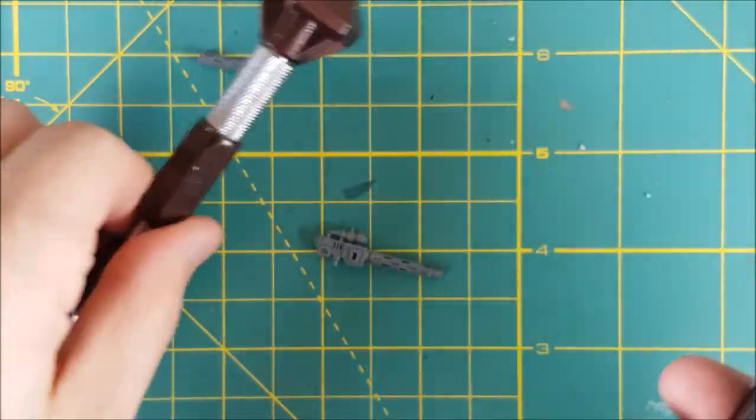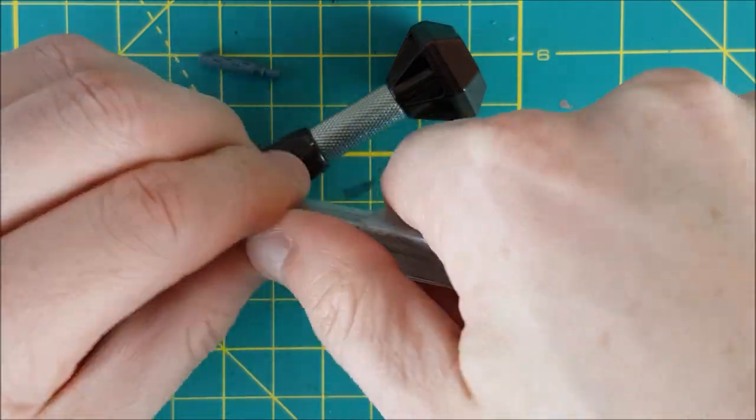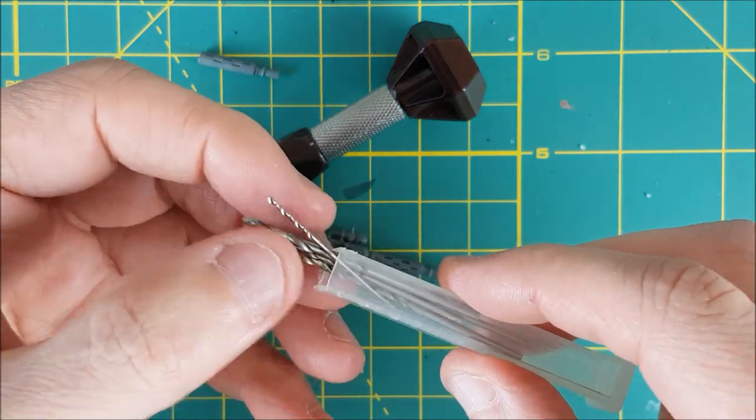This is the Citadel hand drill and is perfect for drilling holes for gun barrels or pinning miniatures, since the smallest drill bit is the same diameter as a paper clip, which is probably the easiest thing to use for a steel pin.